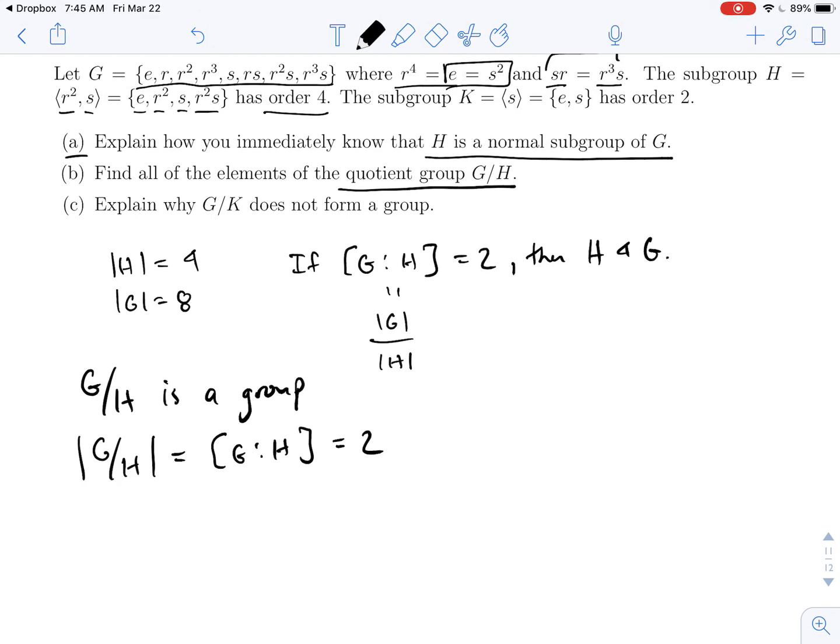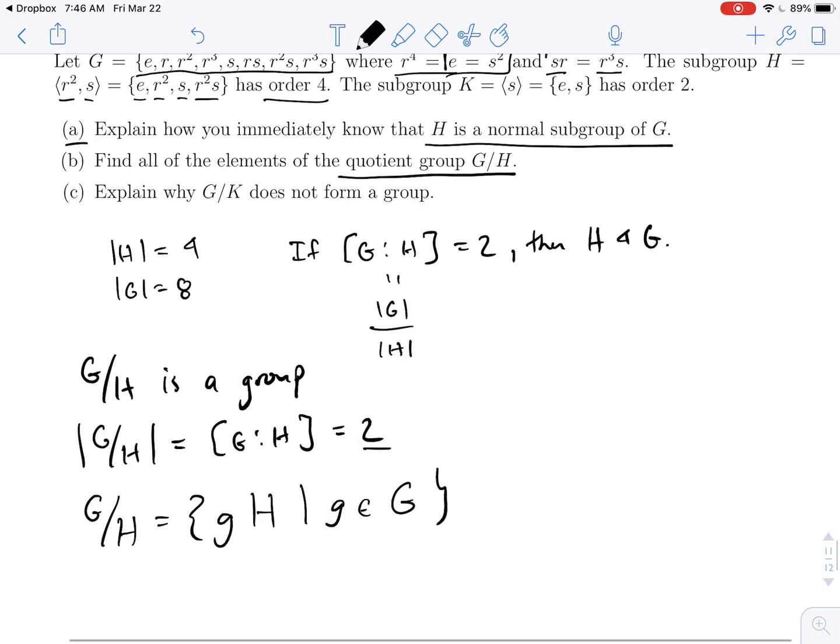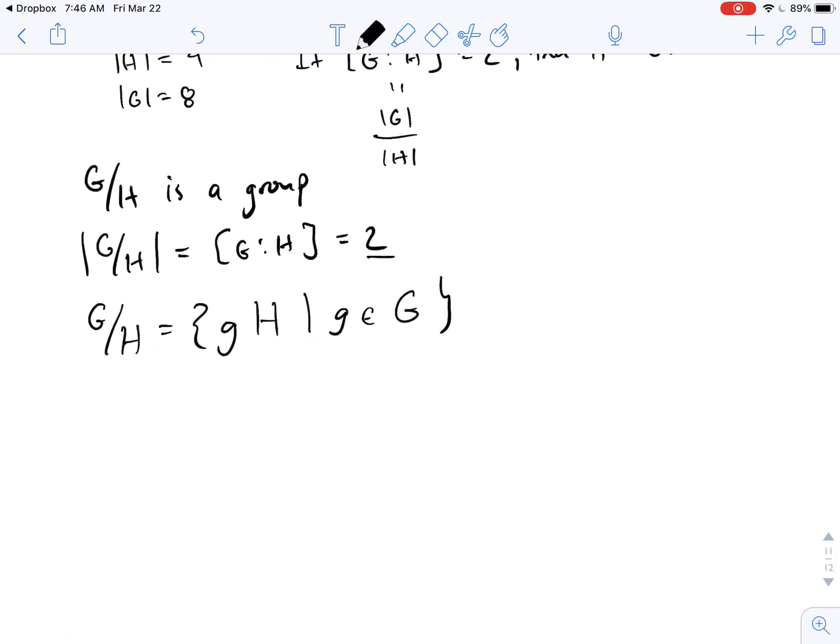Now, what do elements in a quotient group look like? Well, they look like cosets. So G mod H, just in general, you would write down, this is all left cosets of H. Now, there are eight elements of G, so in principle, I could write down eight of these things. But we only need to write down two, right? Because that's actually the order of the group. That means there's going to be a lot of repeats.